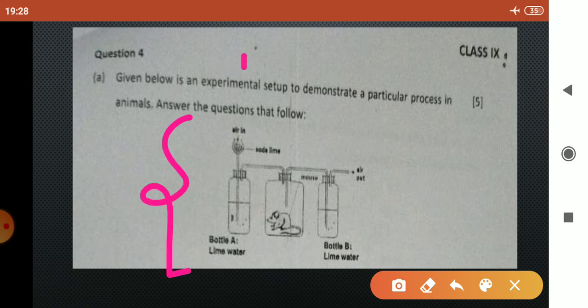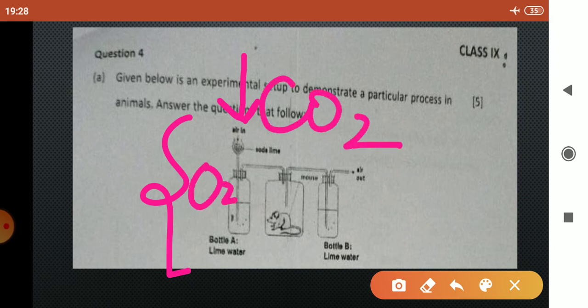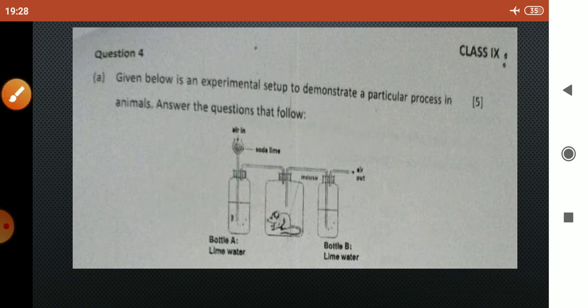In this setup you can see that as air is passing in it goes through soda lime. So soda lime will absorb all the carbon dioxide. Only oxygen will move inside. Therefore, the lime water present here will remain clear because no carbon dioxide is present. Whereas the gas moves through the mouse, it takes the oxygen and releases carbon dioxide. This carbon dioxide passes through bottle B and turns the lime water milky.